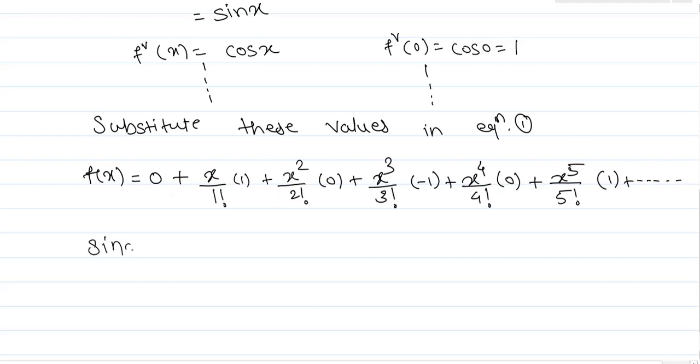...of sin x as x - x³/3! + x⁵/5!. This is odd powers of x with alternating sign, meaning the next term is x⁷/7! up to infinity.